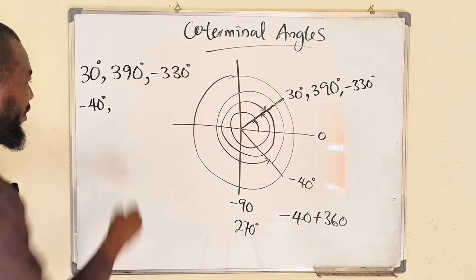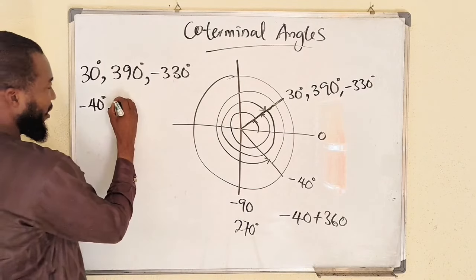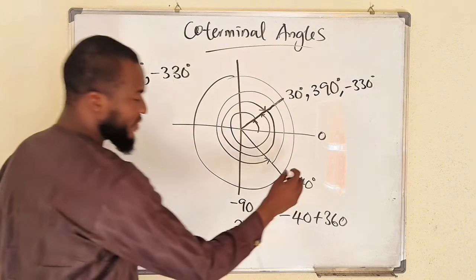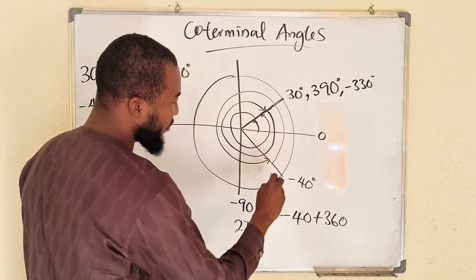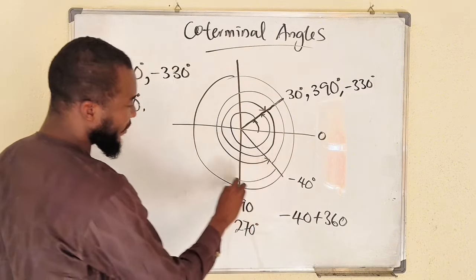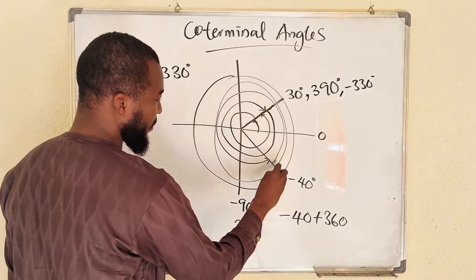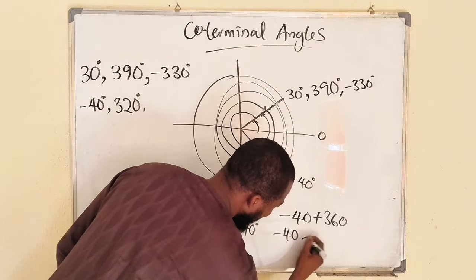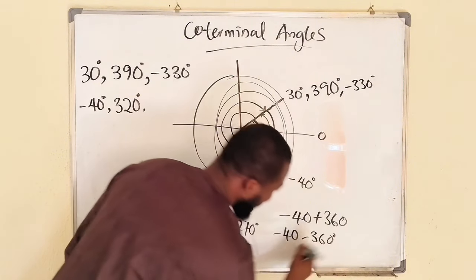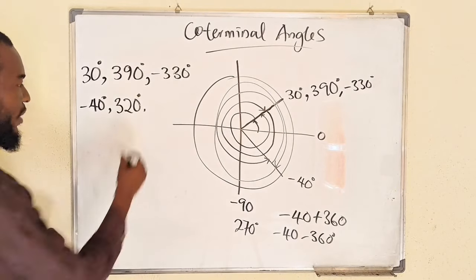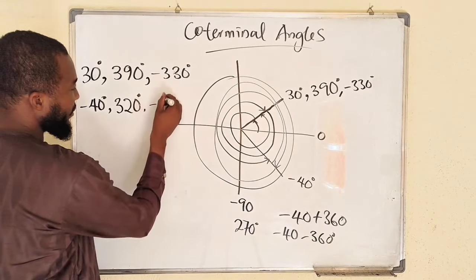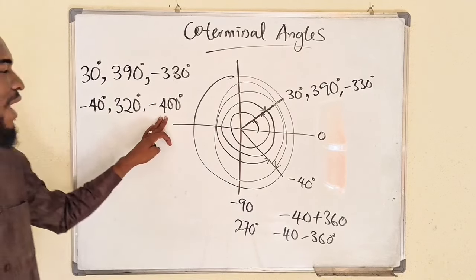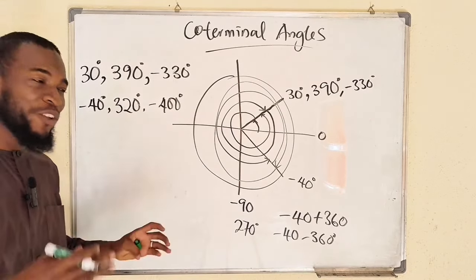320 degrees is a coterminal angle of negative 40 degrees. If you decide to move in the negative direction, you add negative 360 degrees, which gives us negative 400 degrees. So all three angles — negative 40, 320, and negative 400 — have the same ratio.